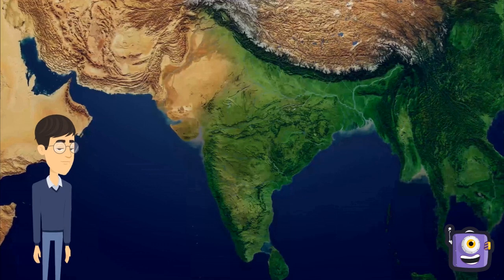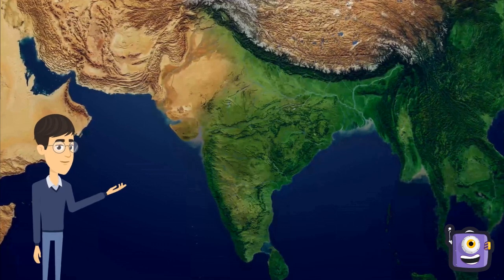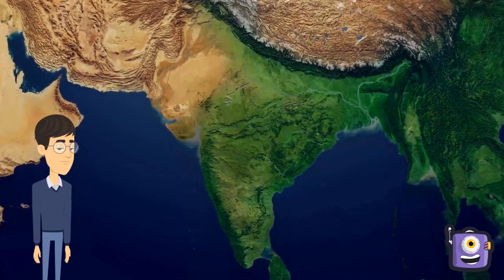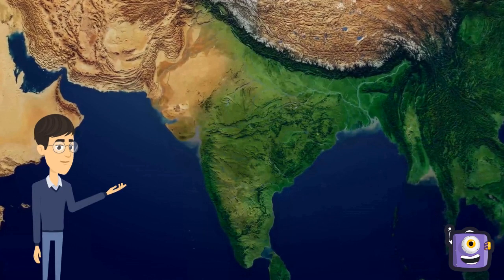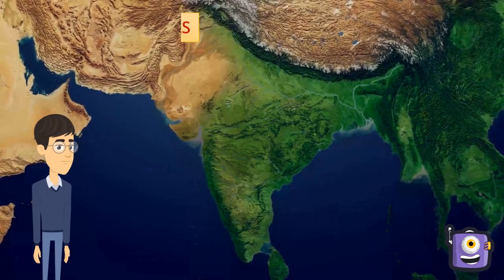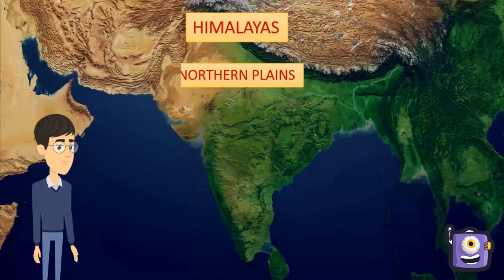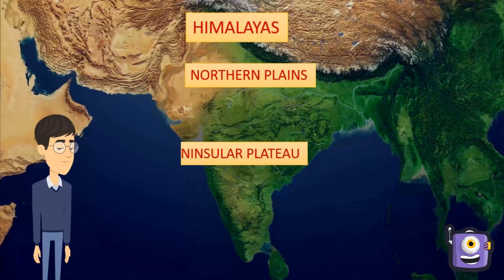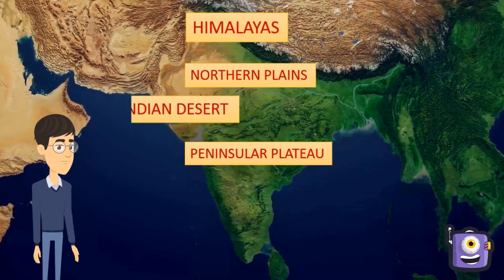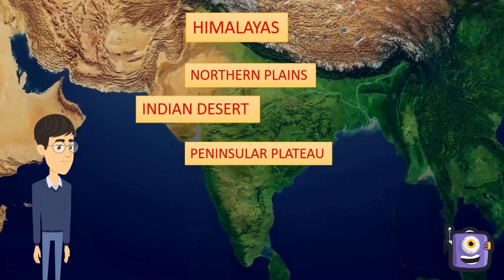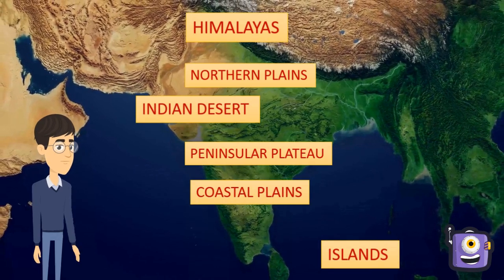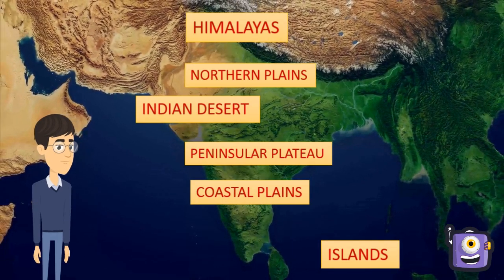Based on the physiographic features, India can be divided into six divisions: the Himalayan mountains, the northern plains, the peninsular plateau, the Indian desert, the coastal plains, and the islands.